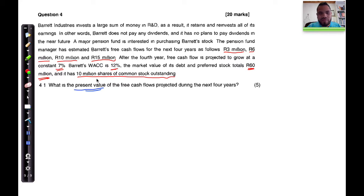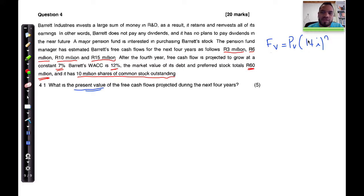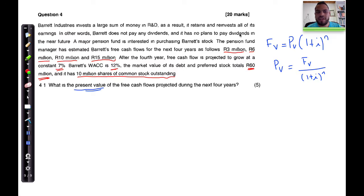The fifteen million rand in the future should be worth less than fifteen million rand today, because the buying power of money decreases over time. The future value formula is: FV = PV × (1 + r)^n. Rearranging, we get: PV = FV ÷ (1 + i)^n, where i is the rate or cost of capital.